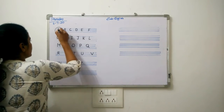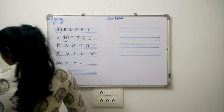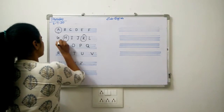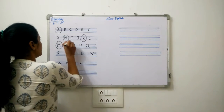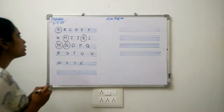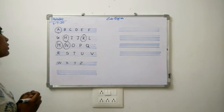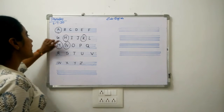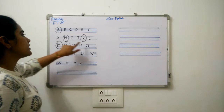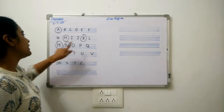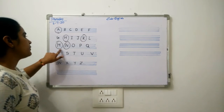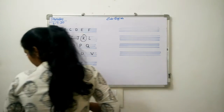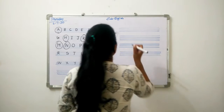Now today we are going to learn some letters. We are learning letter H, letter A, letter K, letter M, letter N. Today we are going to learn five letters: A, H, K, M, N.